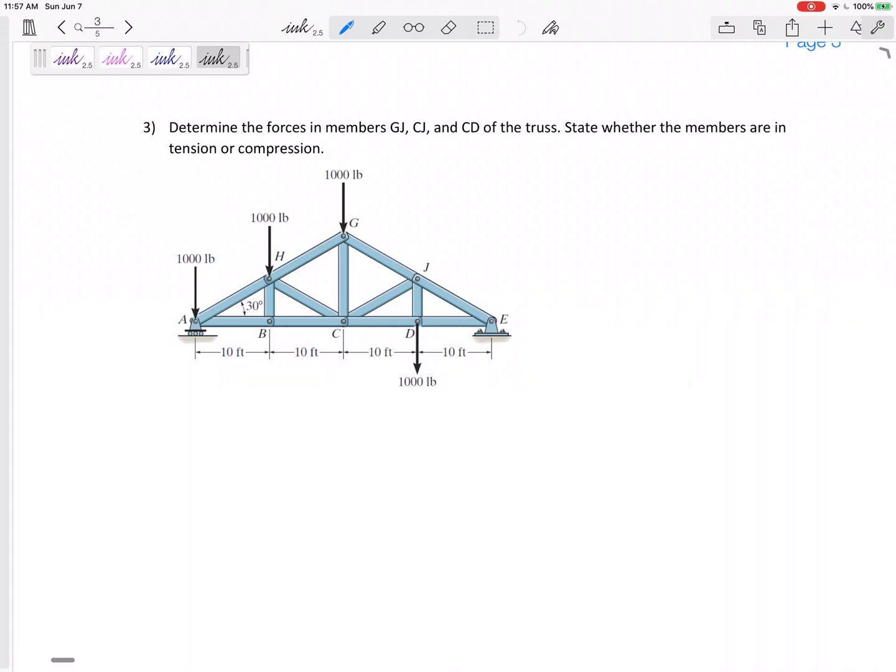Okay, so problem number three will be a truss problem. In this class we've only looked at method of sections, so it'll be method of sections truss problem. Determine the forces in these three members: GJ, CJ, and CD.